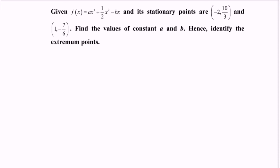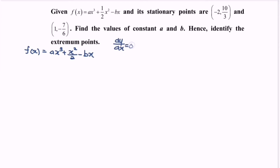Given the function f(x) is equal to a multiplied with x cubed plus x squared over two minus bx, and its stationary points are (-2, 10/3) and (1, -7/6). Here we have the situation where dy/dx is equal to zero, and we obtain the values x equals negative two and x equals one.